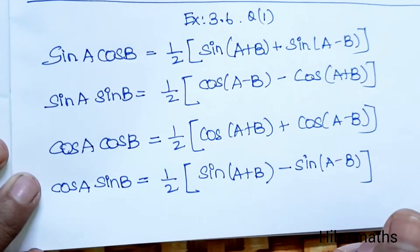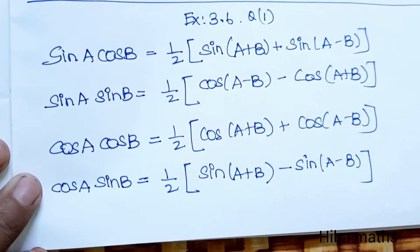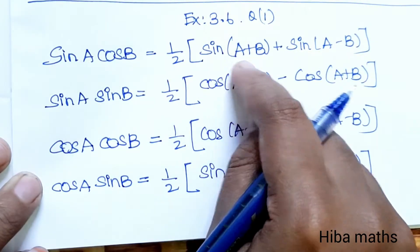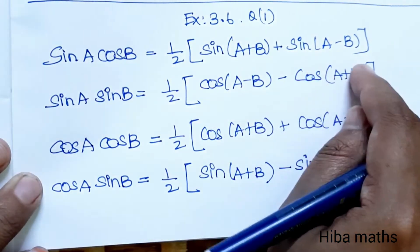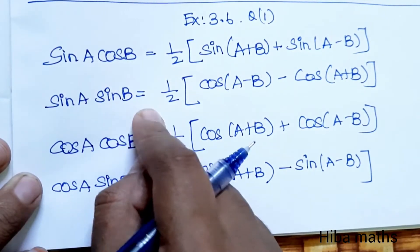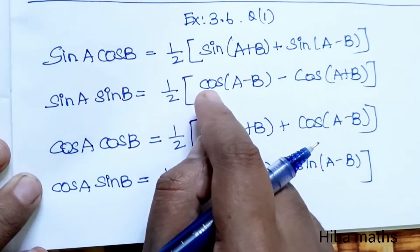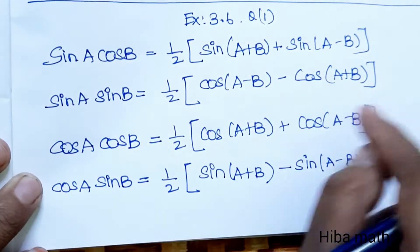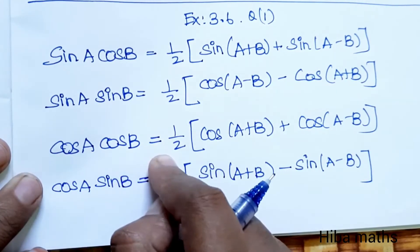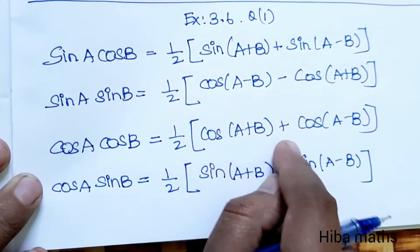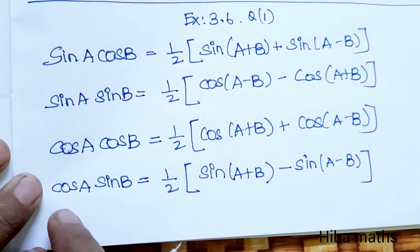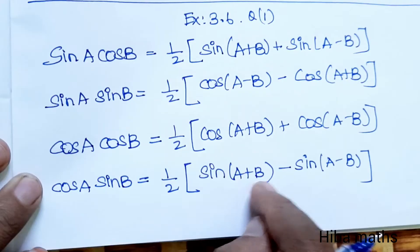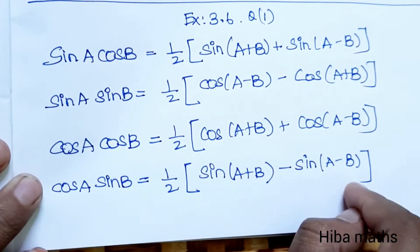Exercise 3.6, first question — use these formulas. Sin A cos B = 1/2 [sin(A+B) + sin(A−B)]. Sin A sin B = 1/2 [cos(A−B) − cos(A+B)]. Cos A cos B = 1/2 [cos(A+B) + cos(A−B)]. Cos A sin B = 1/2 [sin(A+B) − sin(A−B)].